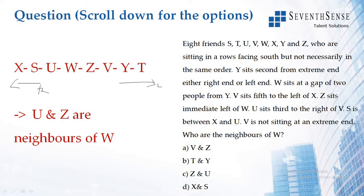They are asking who are the neighbors of W. The neighbors of W are U and Z. So the answer is Option C.